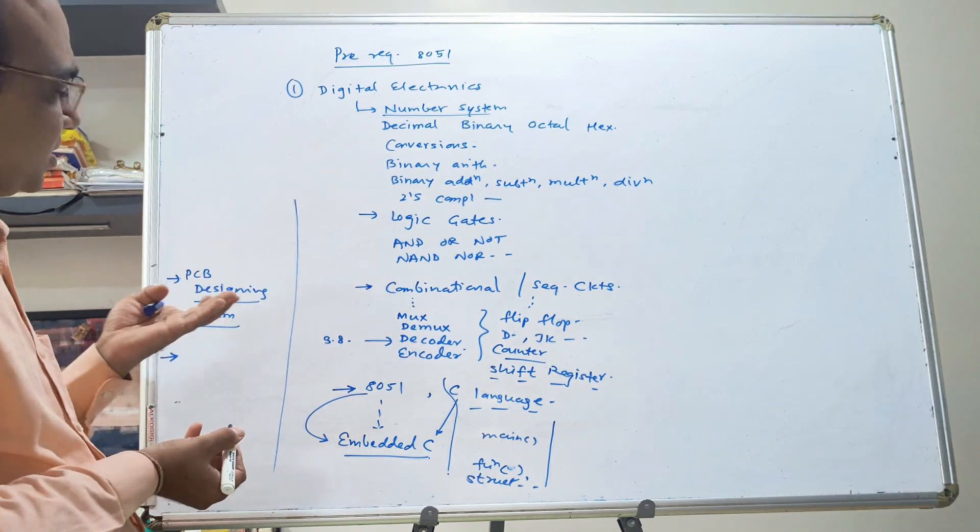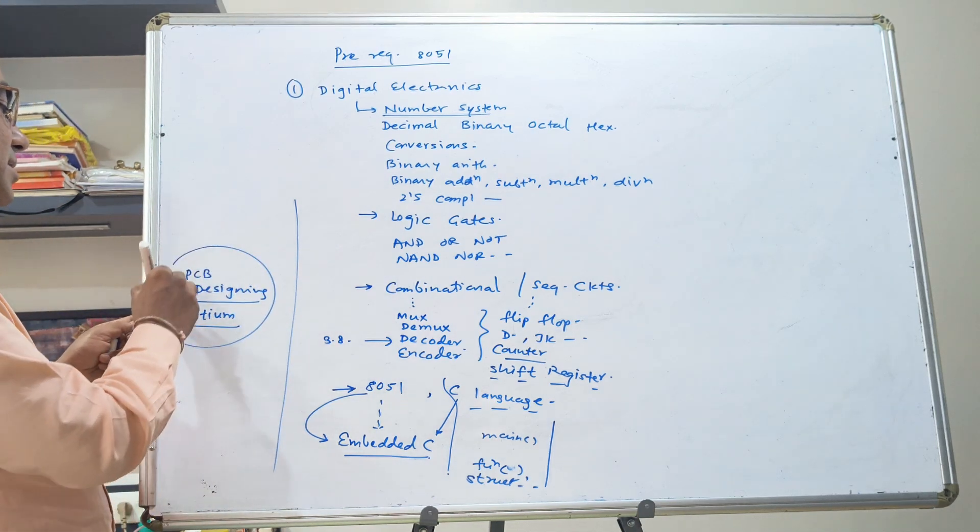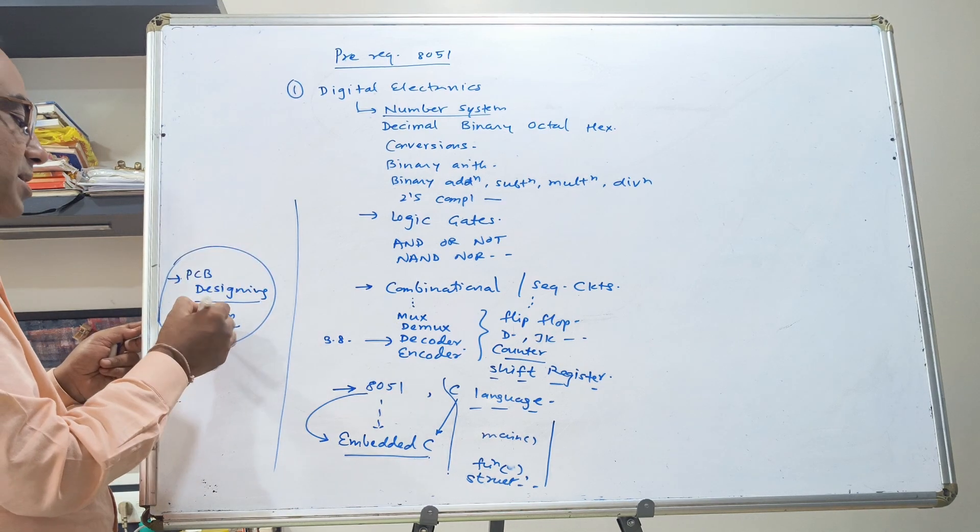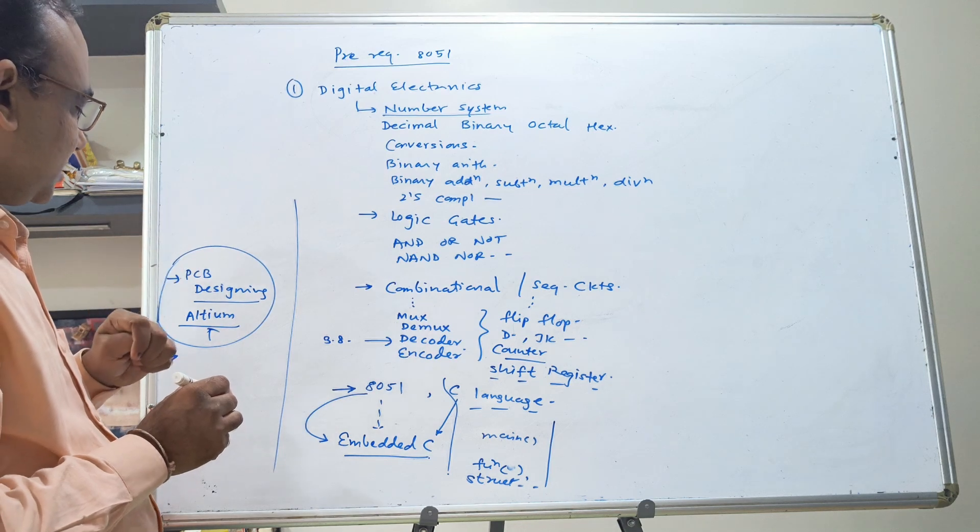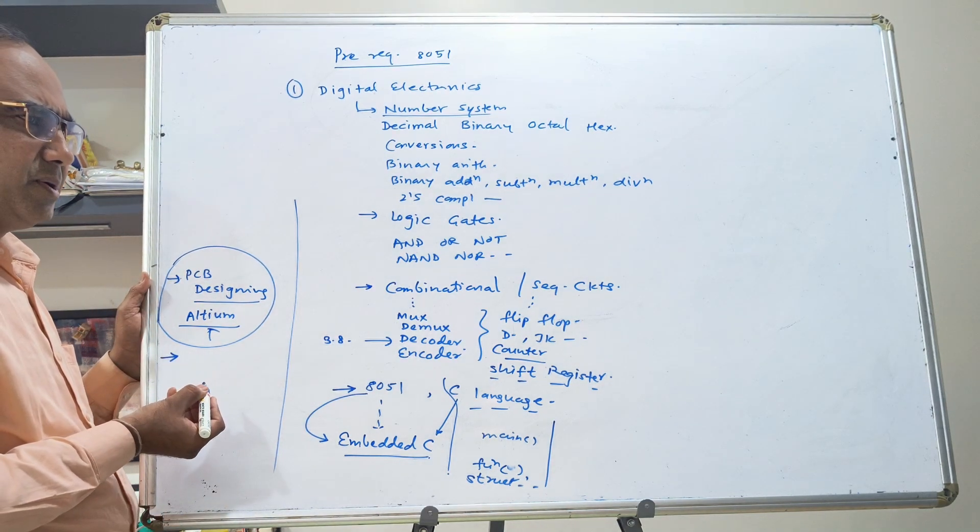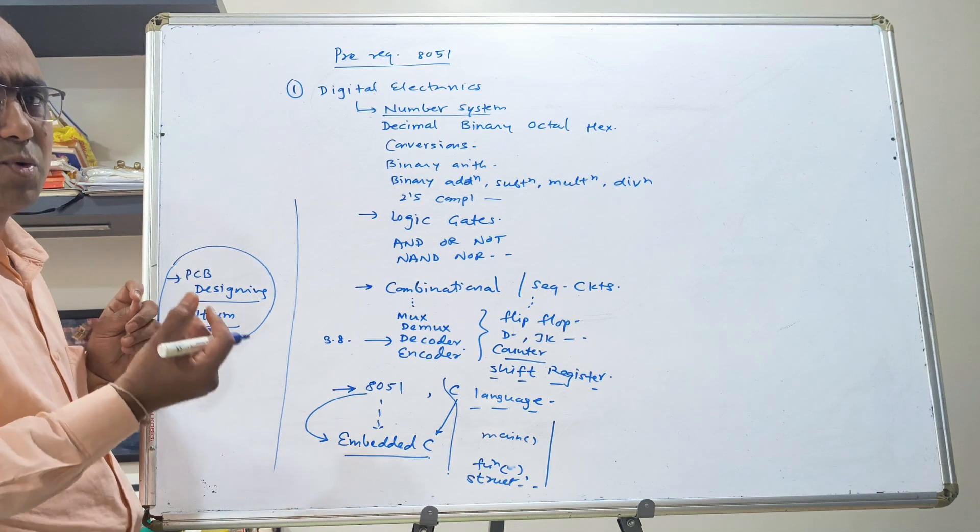Or you can order, you can send the file generated from Altium to market and get the PCB done for you. That is also possible. But for prototype, you should know how we can make our own PCB.